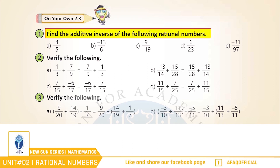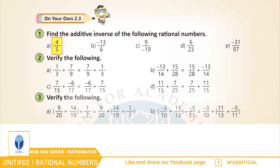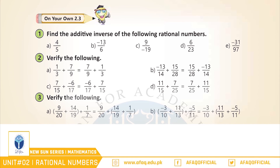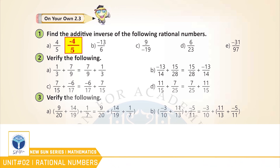Question 1: Find the additive inverse of the following rational numbers. (a) 4/5. Good! اس کا additive inverse ہوگا -4/5۔ اسی طرح سے اس سوال کے اگلے parts آپ نے خود حل کرنے ہیں۔